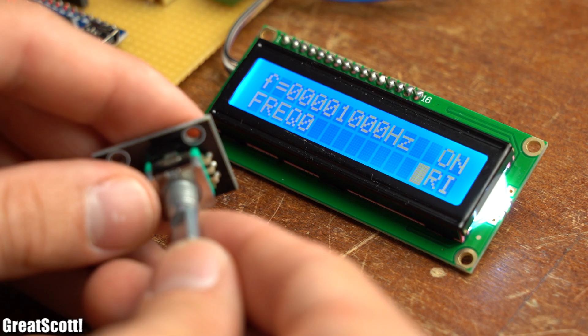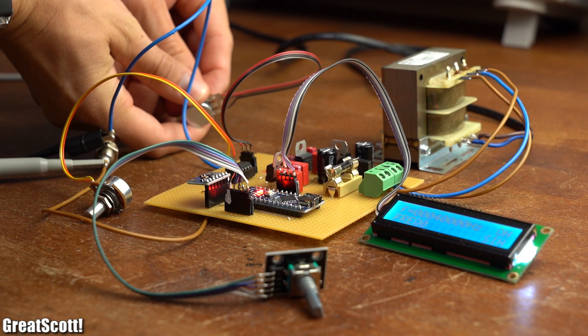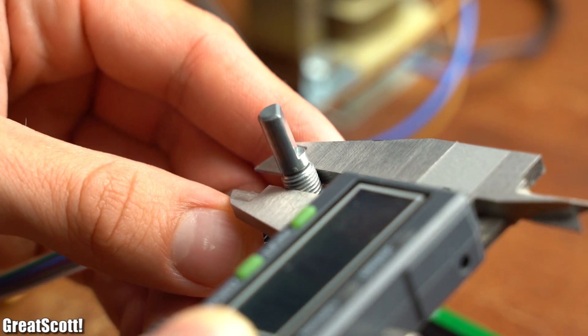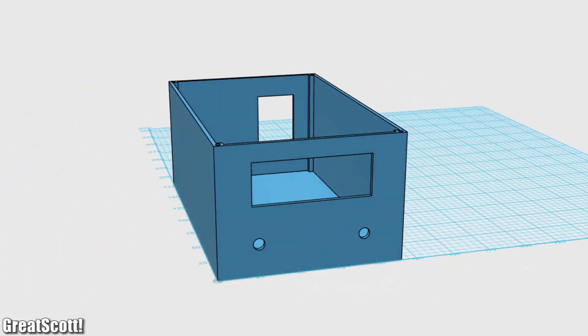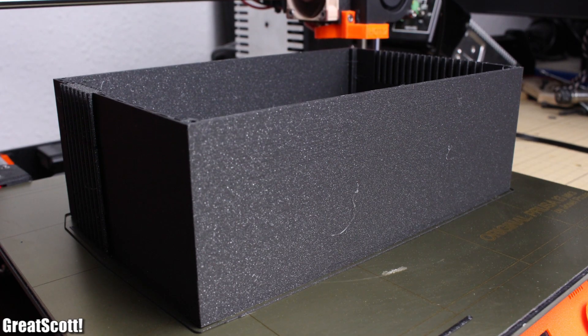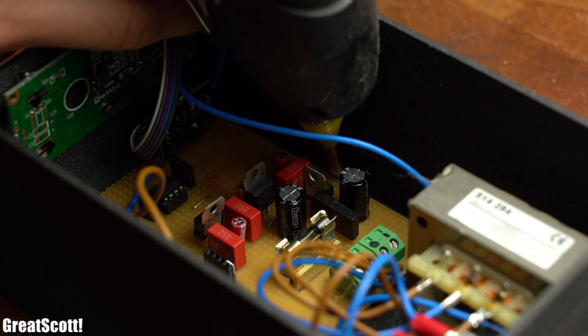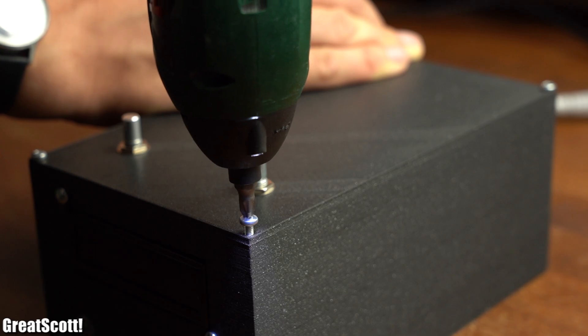But since such a naked function generator is not comfortable and safe to work with, I started measuring the dimensions of all the components and designed a housing for it in 1-2-3D design. After then 3D printing it, which took around 15 hours, I mounted the external components in place and glued the transformer and perfboard into the box, which means my DIY function generator was complete.